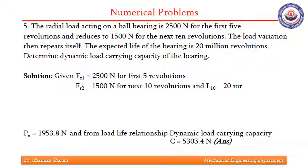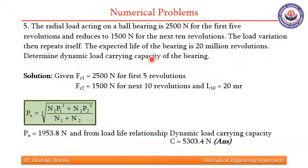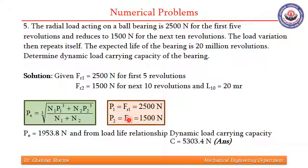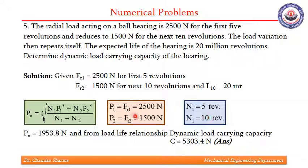The fifth question involves cyclic loading again. The radial load is 2500 newtons for the first 5 revolutions, reduces to 1500 newtons for the next 10 revolutions, and then the cycle repeats. Life is given as 20 million revolutions and we need to find C, the dynamic load carrying capacity. Since Fa is missing, P1 equals Fr1 and P2 equals Fr2. Using n1 = 5 and n2 = 10 revolutions, we find the equivalent Pe, and from the load-life relationship for a life of 20 million revolutions, C comes out to be 5303.4 newtons.